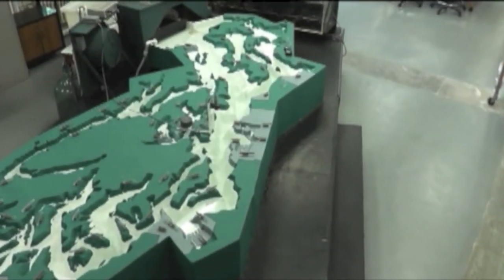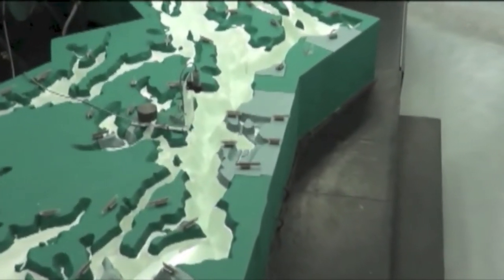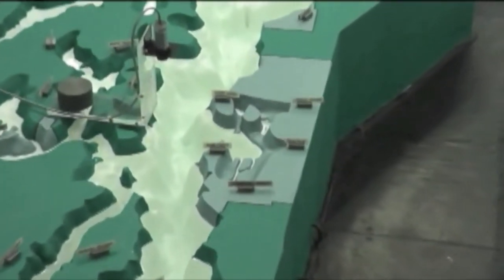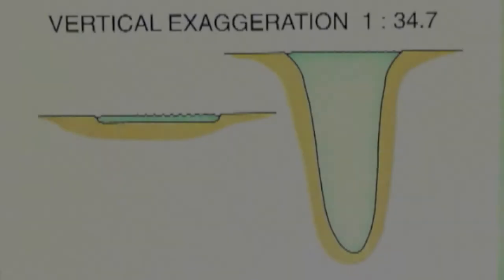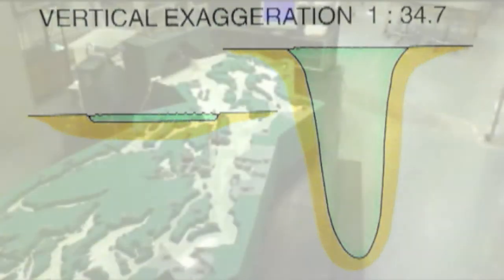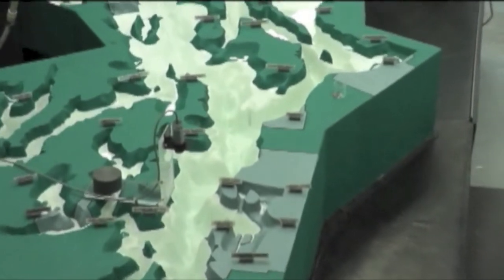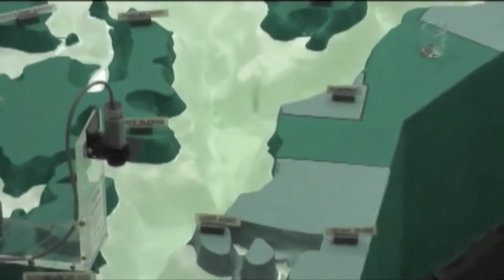Horizontally, the model is scaled down about 40,000 times, so that one inch in the model equals about one kilometer, or two-thirds of a mile, in the real world. But depth in the model is exaggerated almost 35 times compared to the horizontal dimensions. This is to reduce friction with the bottom so water can move more freely.